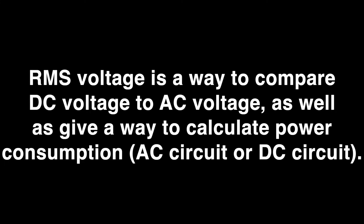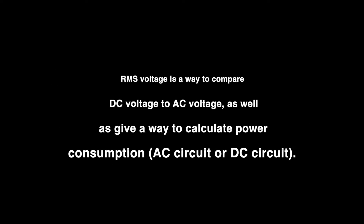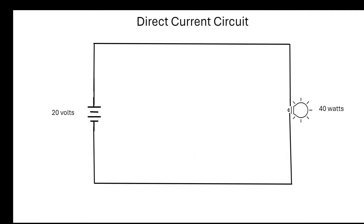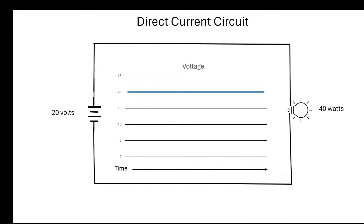RMS voltage is a way to compare DC voltage to AC voltage and to give a way to calculate power consumption, whether it's an AC circuit or a DC circuit. To get started, let's look at a DC circuit. We've got a 20-volt power source — a battery — and a 40-watt light bulb. Looking at a graph showing what the voltage does over time: on a DC circuit, the voltage doesn't change. The blue line stays at 20 regardless of how much time passes.